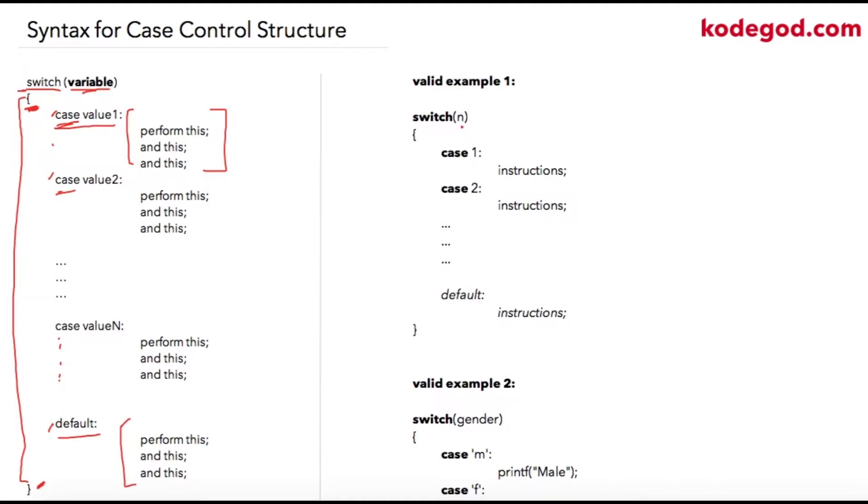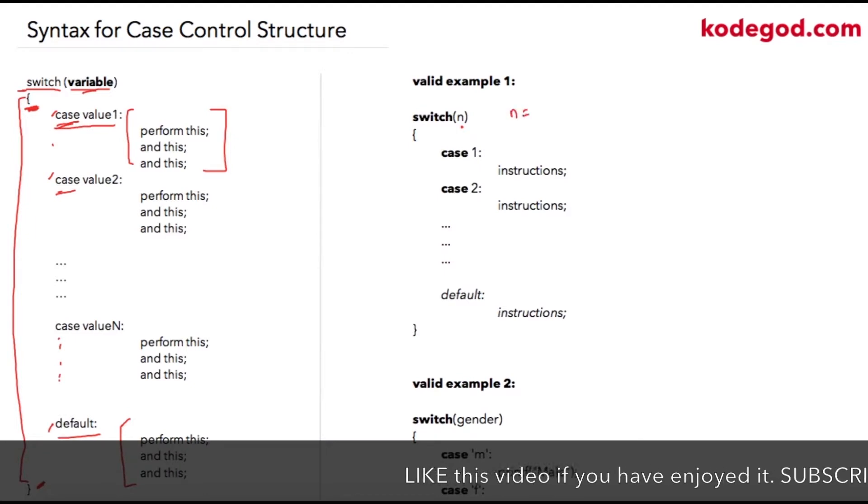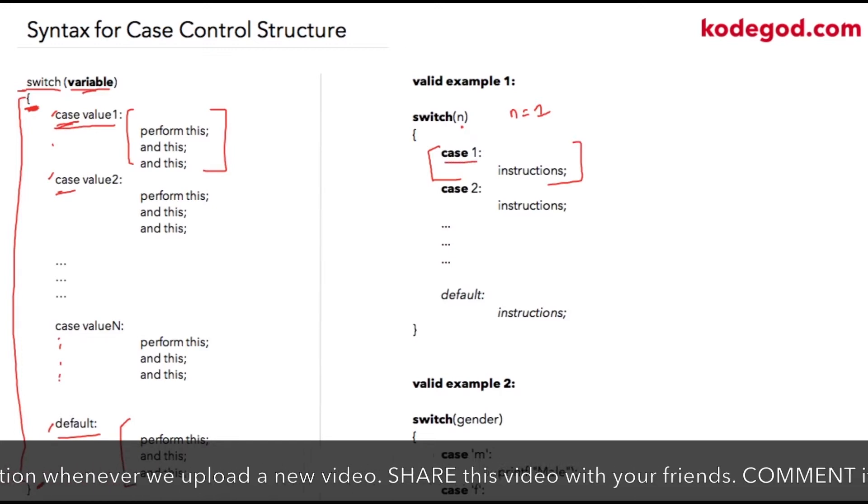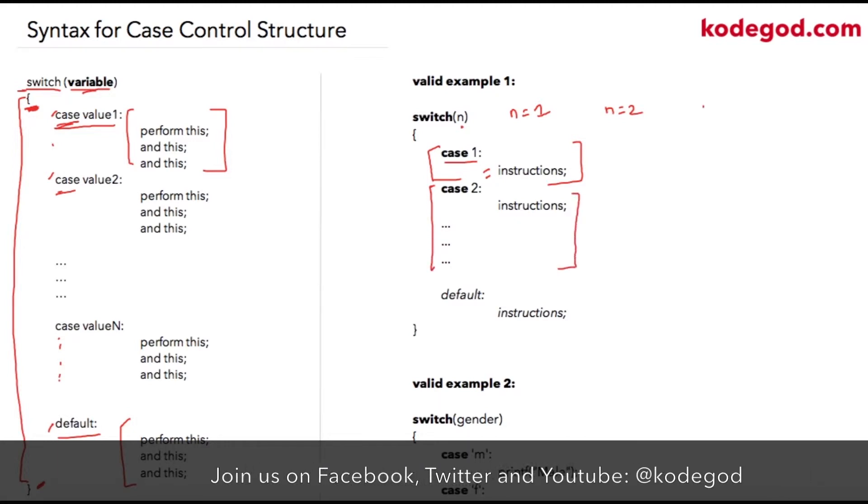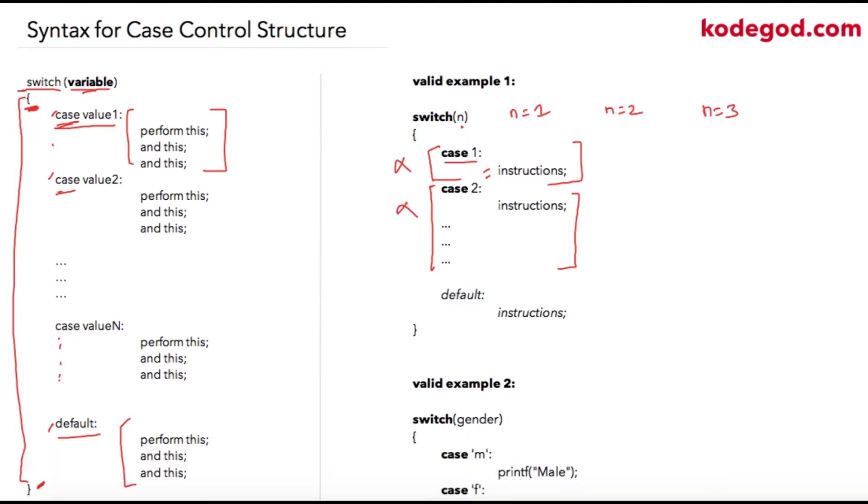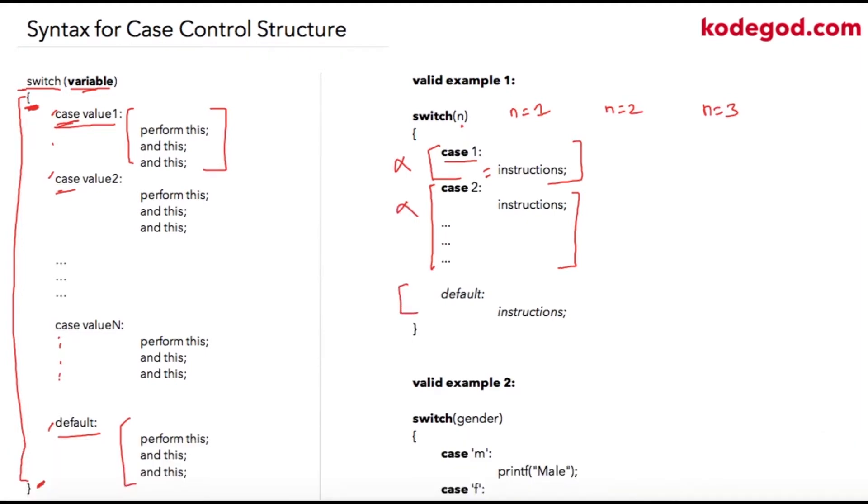Which is provided by user. If n is equal to 1, then this case will be executed. So this case will be true and all the instructions which are inside this case block will be executed. Alternatively, if n was equal to 2, then this block will be executed. If we assume that n was equal to 3, then these two cases will be ignored and this part will be executed.